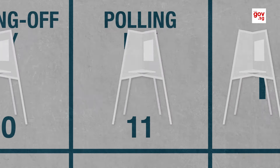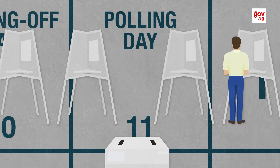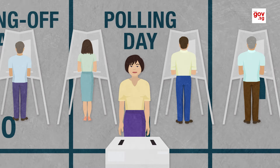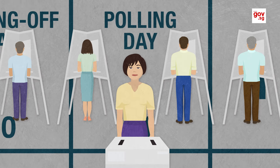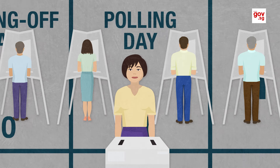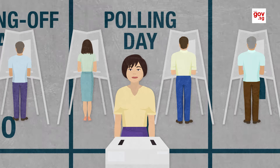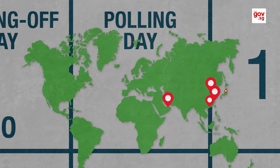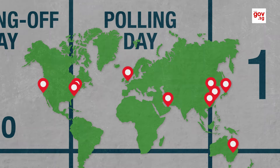On polling day, voters who are registered in the register of electors in contested constituencies would cast their votes between 8 am and 8 pm. Registered overseas voters may cast their votes at overseas polling stations allotted to them.